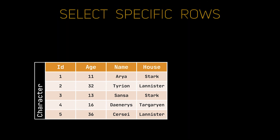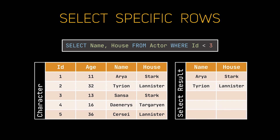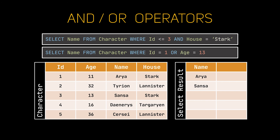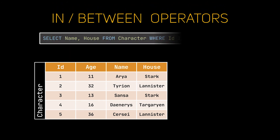To select columns based on a specific condition, we can use the WHERE keyword similarly to UPDATE and DELETE operations. In this case, we are selecting the name and house of the characters with ID strictly less than 3. The condition can be more than a simple equality or a mathematical operator such as equal, greater than, less than, etc., but can be extended to make use of the AND or OR logical operators. We are selecting the name of the characters that have an ID less than or equal to 3 AND belong to house Stark. In our case, the statement making use of the OR operator will return the same results.